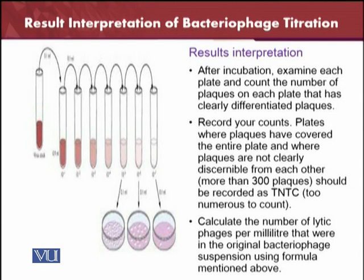If there are too many plaques, it is very difficult to count and those plates will be considered TNTC. Similarly, you should choose plates which contain between 50 to 500 plaques, as that range makes it easy for results interpretation and you can easily examine them.